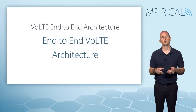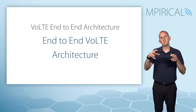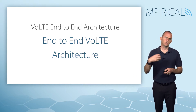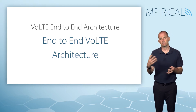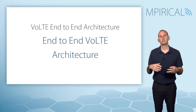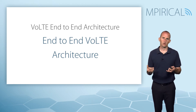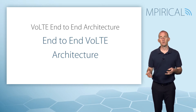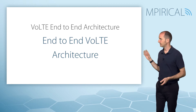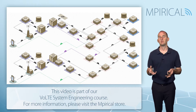In the other videos comprising this VoLTE end-to-end architecture module, we considered the standalone aspects of the end-to-end VoLTE architecture — we looked at LTE, IMS, and policy and charging control. This session is designed to tie all of those together and show how they all connect with one another on an end-to-end VoLTE call scenario. There is one diagram we can use to outline this, which is also in the reference document accompanying this video module.